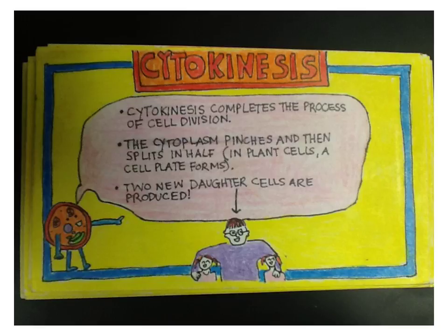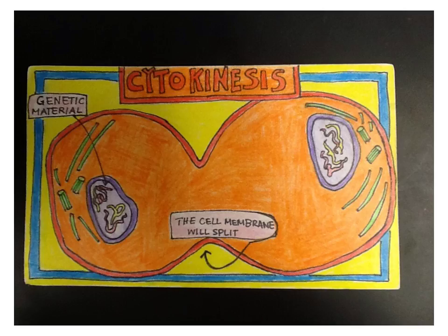On the back of the third telophase card, there's cytokinesis. Cytokinesis completes the process of cell division, but it is not a part of mitosis — mitosis is just when the nucleus is undergoing division. With cytokinesis, as the prefix 'cyto' implies, this is where we divide the cytoplasm so that everybody gets mitochondria, endoplasmic reticulum, Golgi apparatus, etc. It talks about how the cytoplasm is pinching and splits in half and you get two new daughter cells. You only have to do one drawing for cytokinesis.